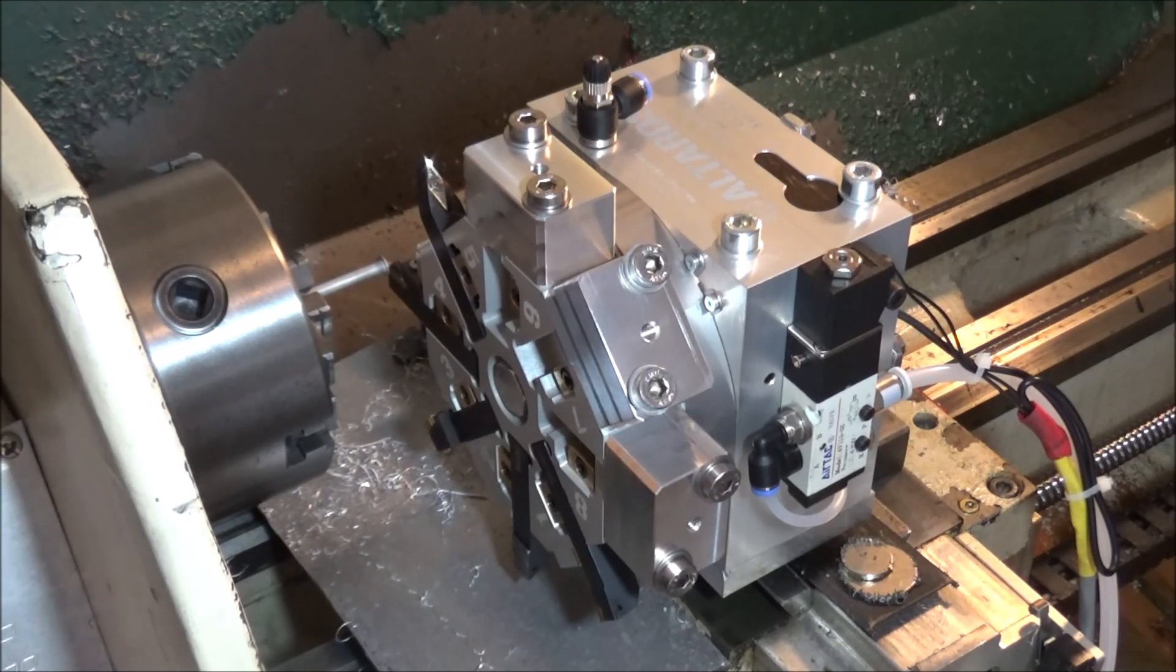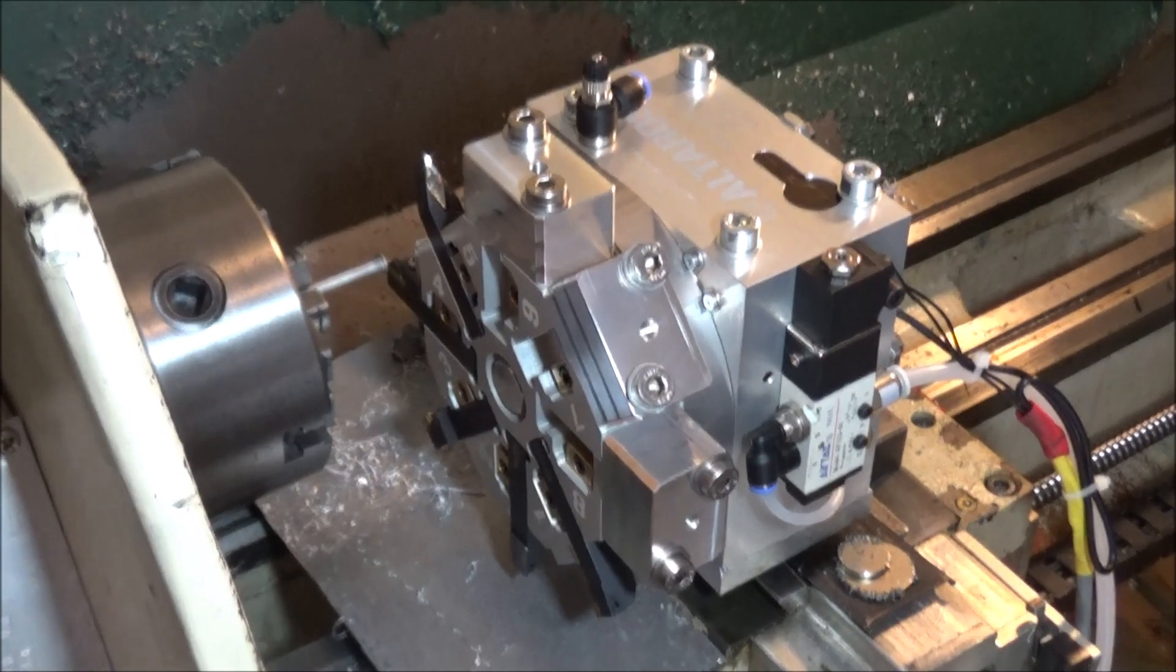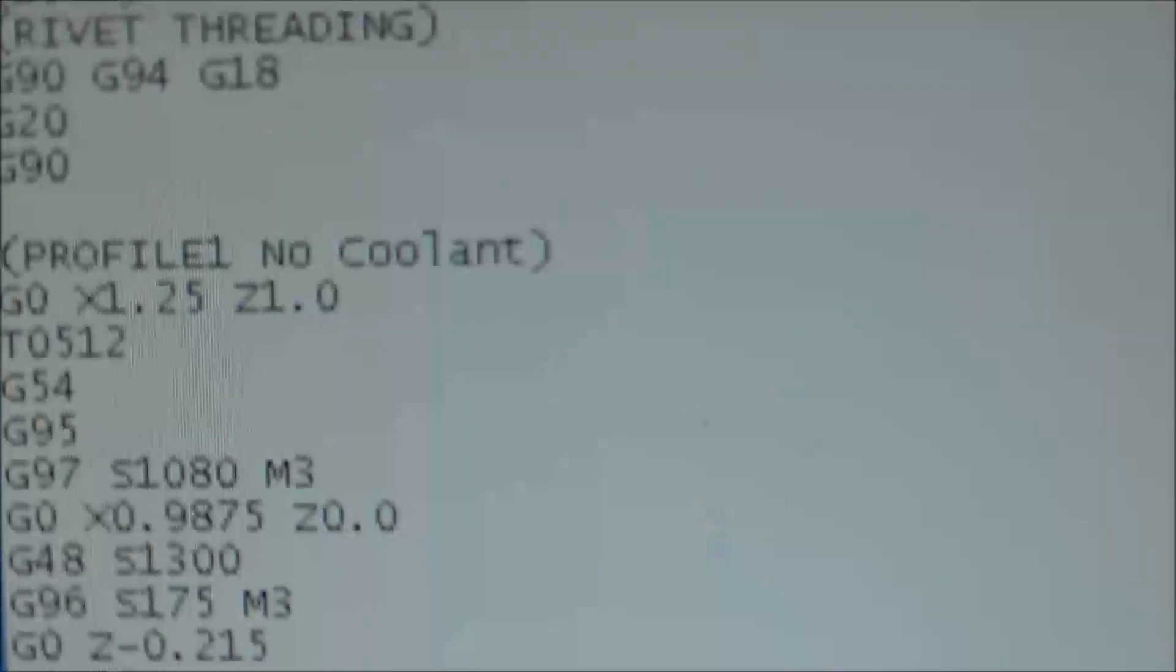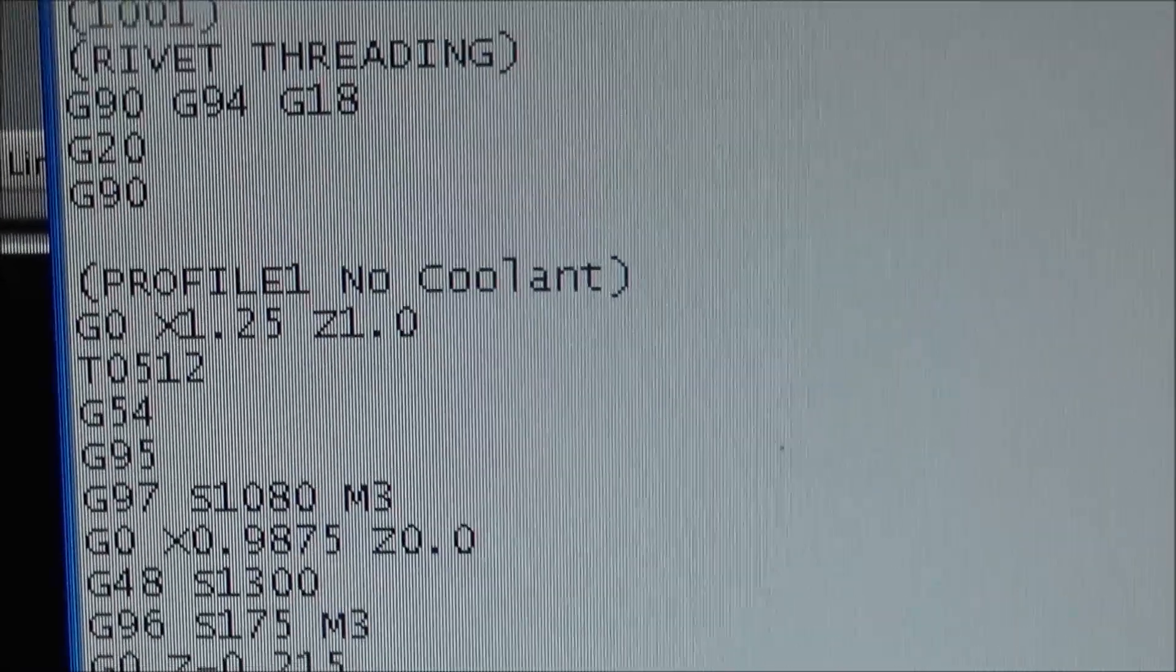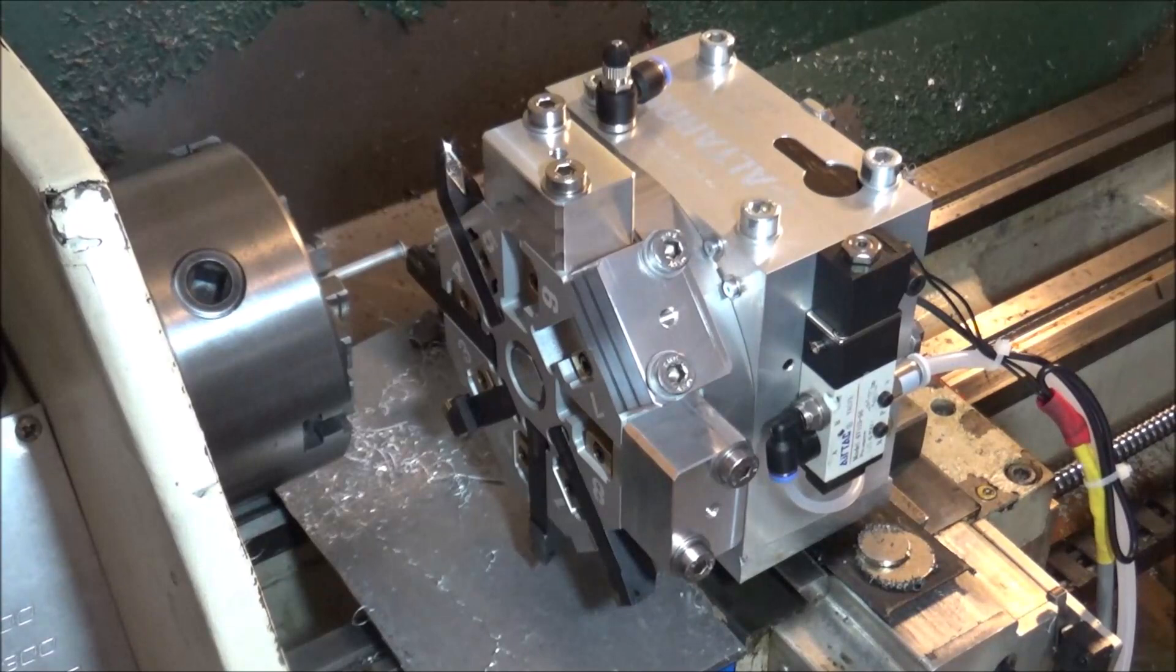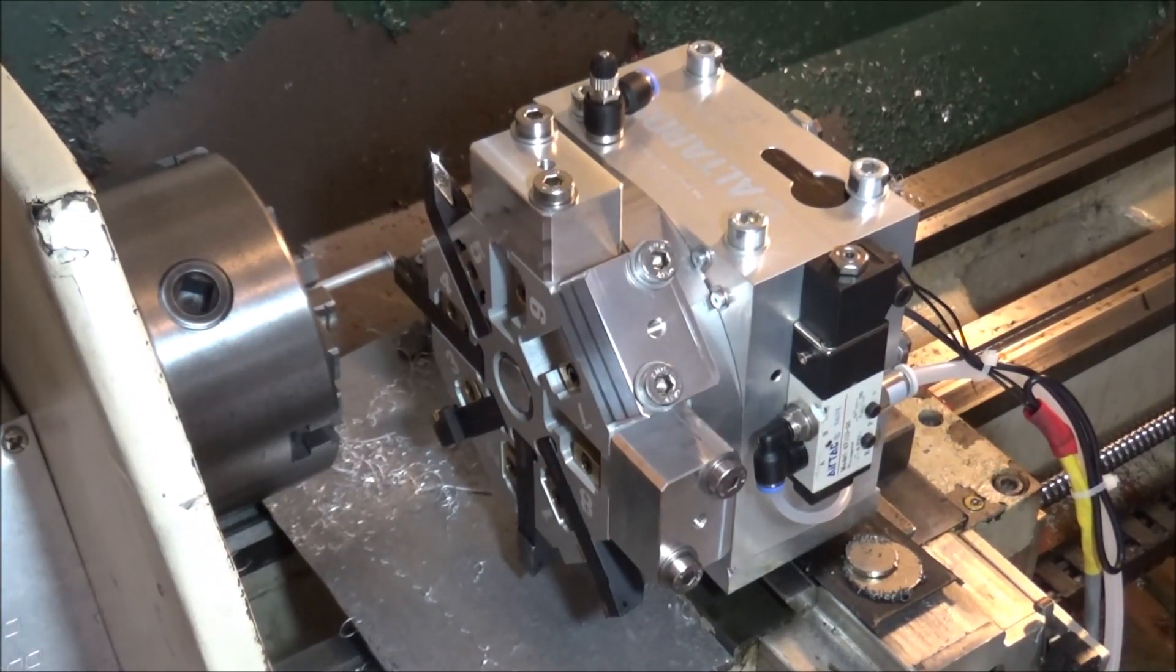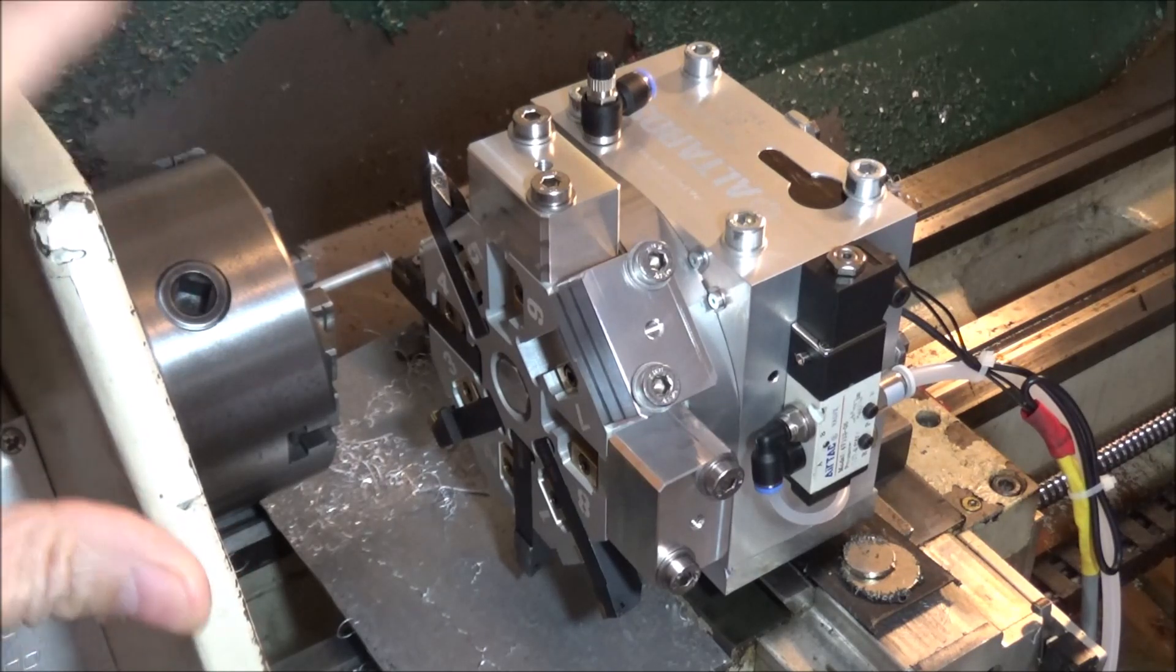The way that Altros wrote the M6 macro, that's all you have to be mindful of. One other thing we need to do is position the turret away from material in order to change the tool. What I've done is just added this line here: G0 X 1.25 Z 1.0. That's going to position my turret out of the way so I can do a tool change.